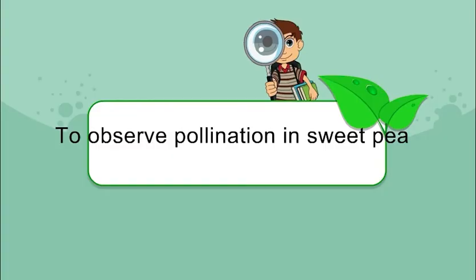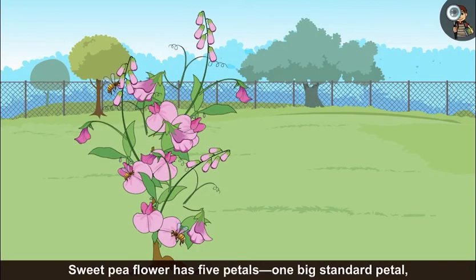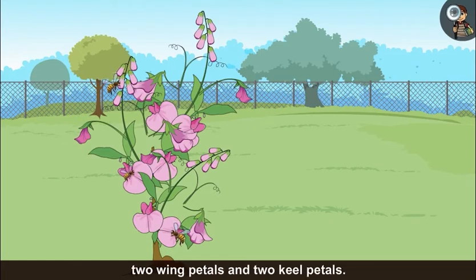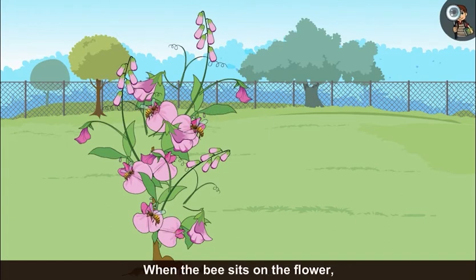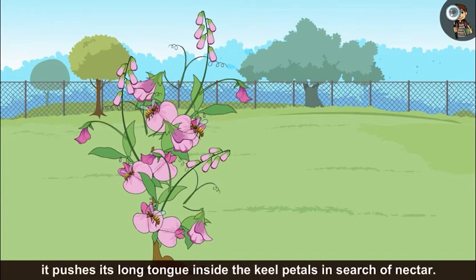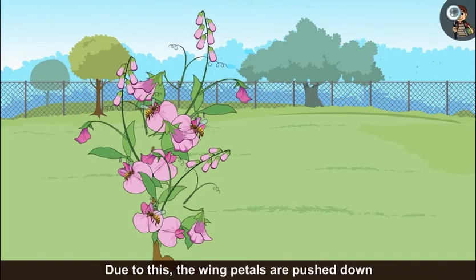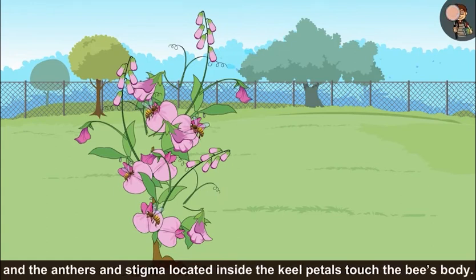To observe pollination in sweet pea: sweet pea flower has five petals—one big standard petal, two wing petals, and two keel petals. When the bee sits on the flower, it pushes its long tongue inside the keel petals in search of nectar. Due to this, the wing petals are pushed down and the anthers and stigma located inside the keel petals touch the bee's body.